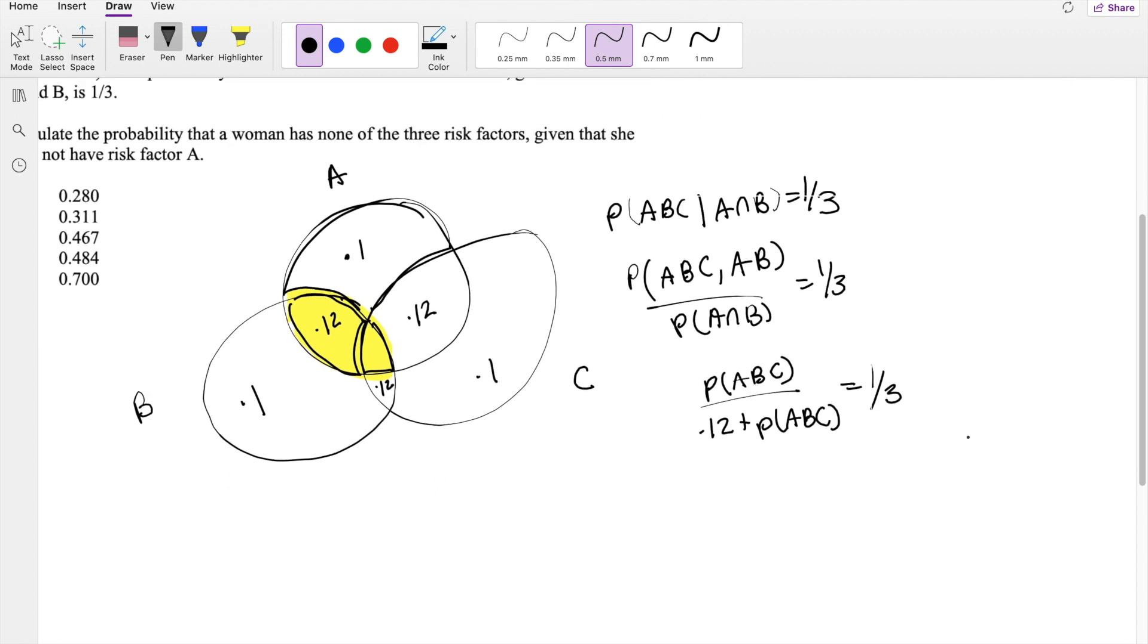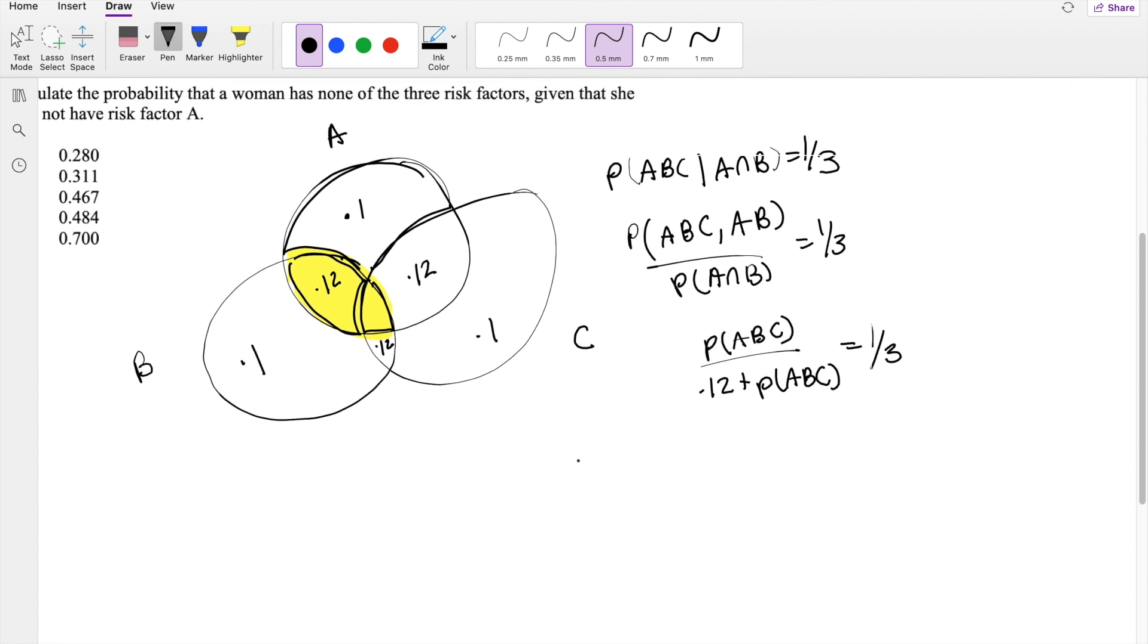I'm going to simplify this by denoting X to be equal to probability of A, B, and C. So this will be equal to X over 0.12 plus X equals 1/3. So X equals 1/3 times 0.12 plus X.